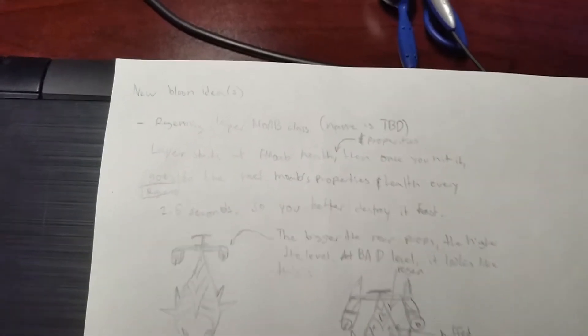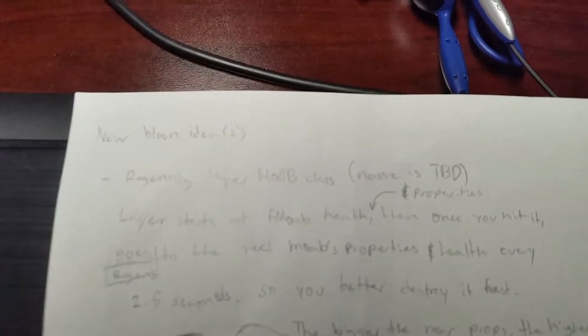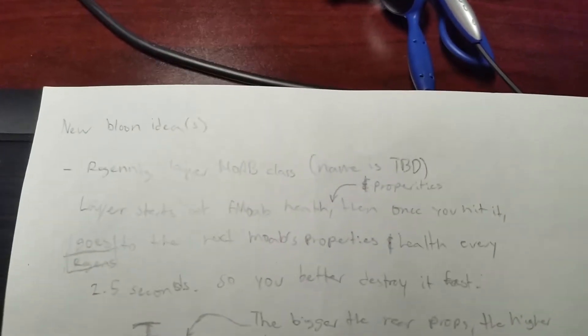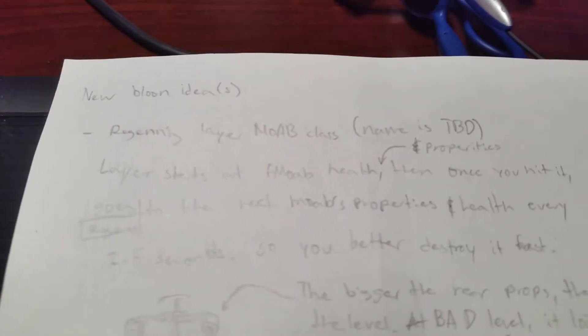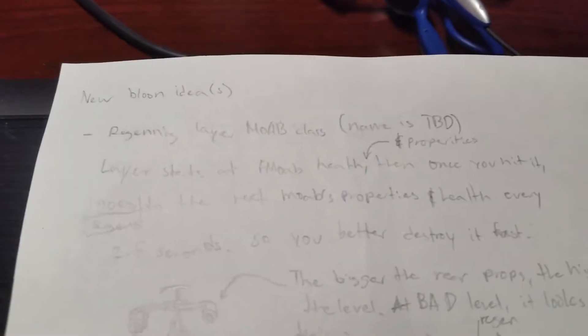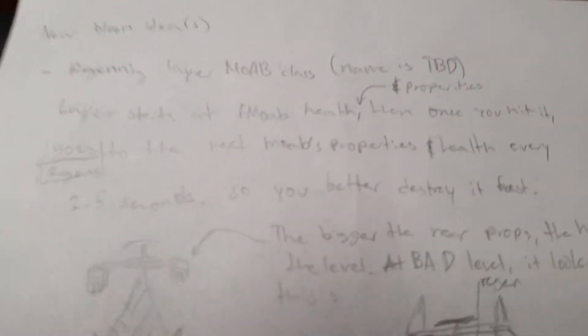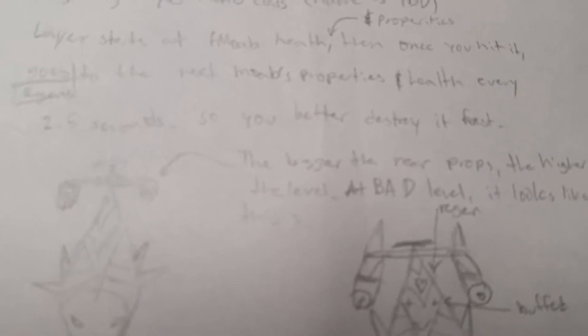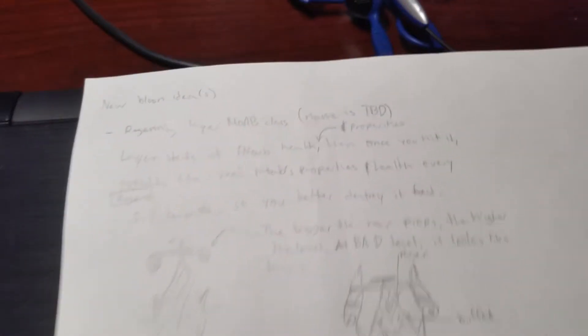First we have a blimp idea, which is a regening layer MOAB class. The name I have not came up with. So it starts out at fortified MOAB health and properties, and then it regens up to fortified BFB health at half the speed of a regular regen balloon.